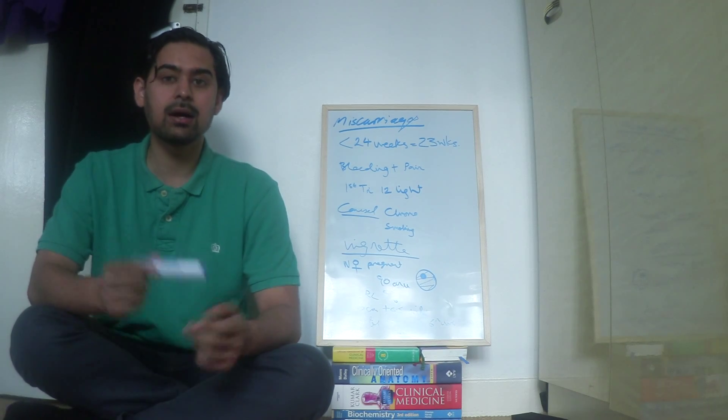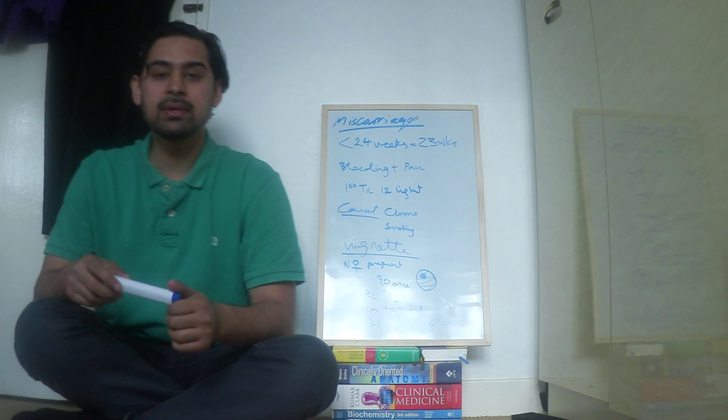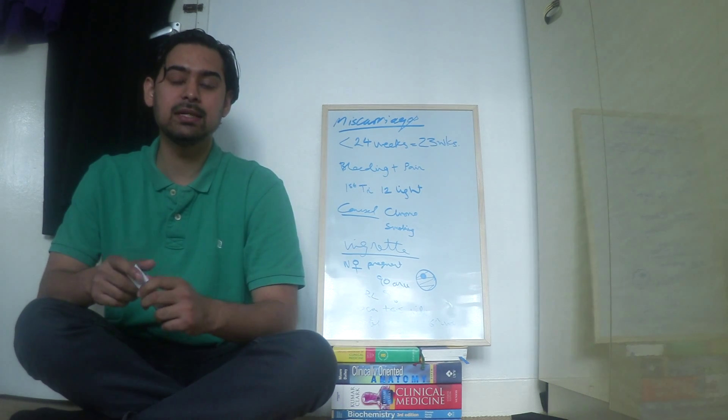Symptoms of a miscarriage are pain and bleeding. However, in the first trimester up to the 12th week you can get light bleeding which isn't always due to a miscarriage.